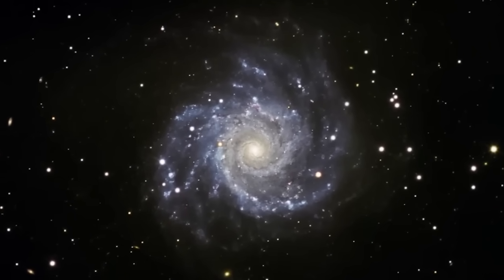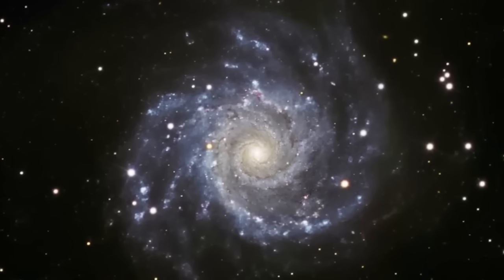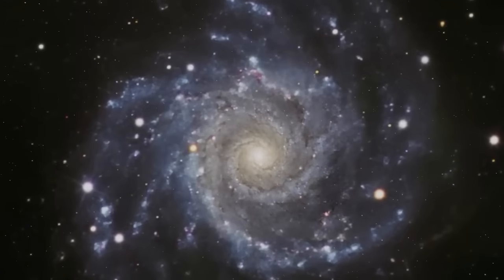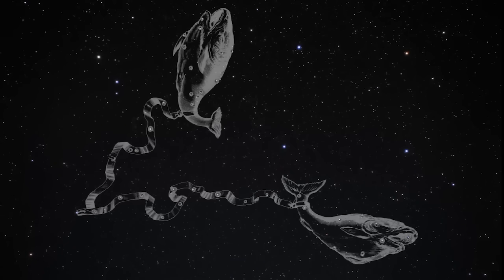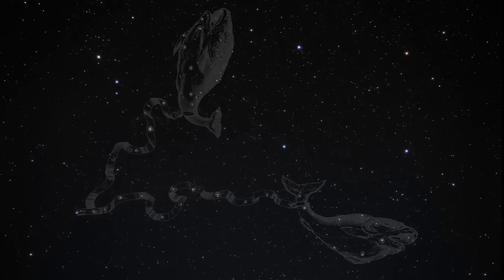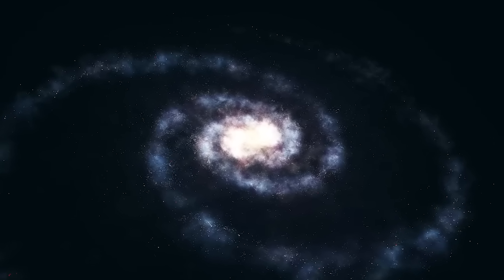M74 is a spiral galaxy of great design, located 32 million light-years from Earth in the constellation of Pisces. This means that unlike other spiral galaxies with irregular structure, it has prominent and well-defined spiral arms.